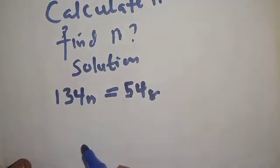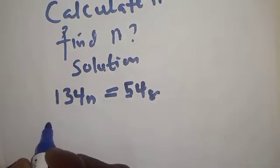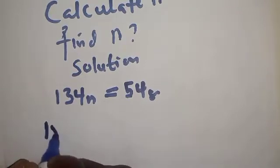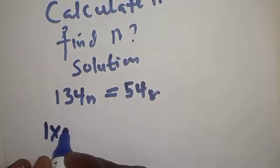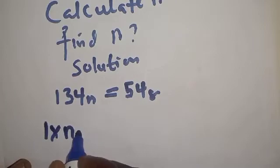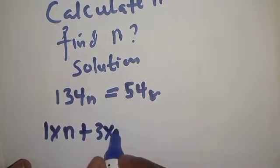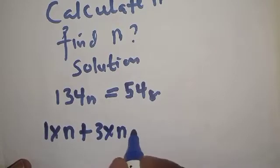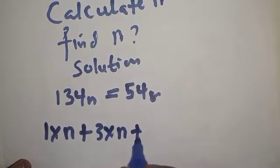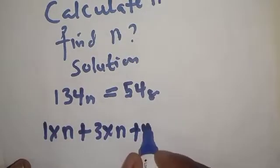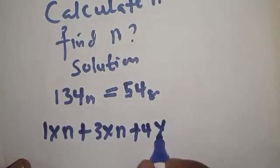Then this can be written as: we have 1 times n squared, because we want to convert it to base 10, plus 3 times n, plus 4 times n to the power 0.